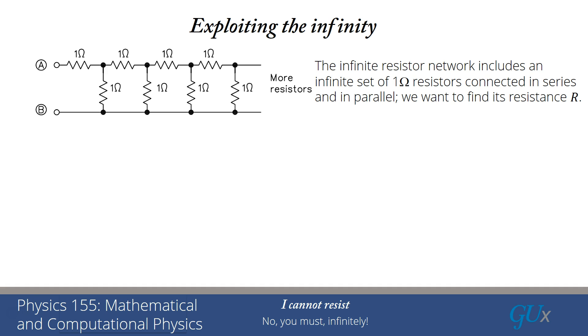That would mean if I connected a battery between A and B, if I knew the total resistance or effective resistance of the system, I could determine what current would flow through the circuit by simply using Ohm's law.